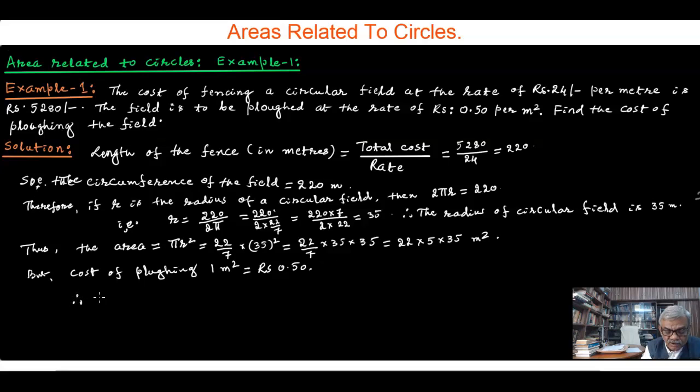Therefore, the total cost of ploughing equals 22 times 5 times 35 times 0.50, which is 1,925 rupees. This is our answer.